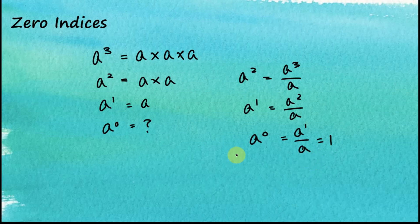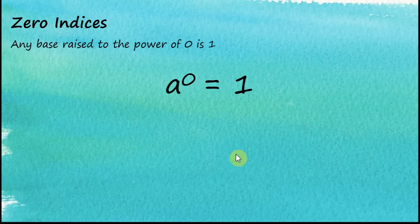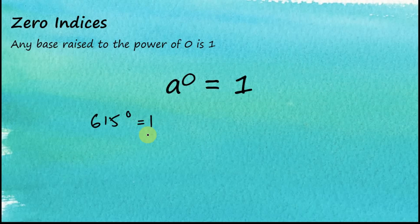Therefore the zero index for any number is equal to 1. So any base raised to the power of 0 is 1 — a to the power of 0 equals 1. For example, 615 to the power of 0 is equal to 1. Even if the number is very, very big, like 2 million — still equal to 1.